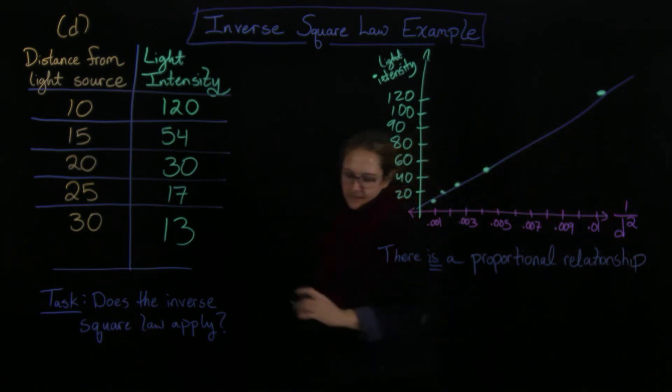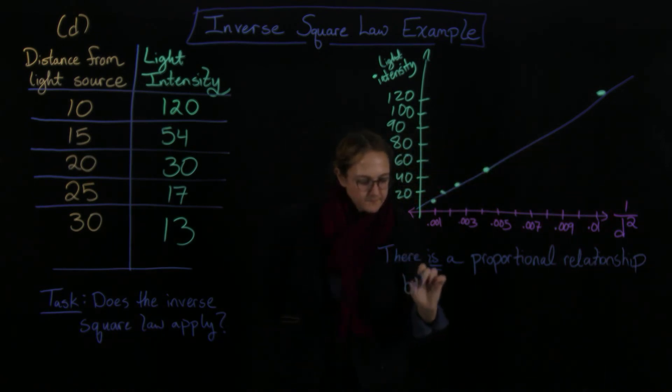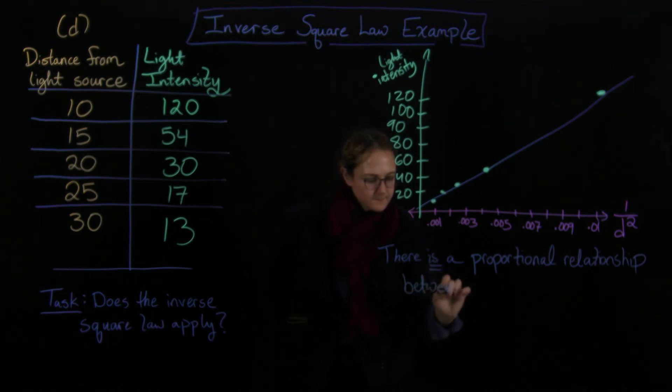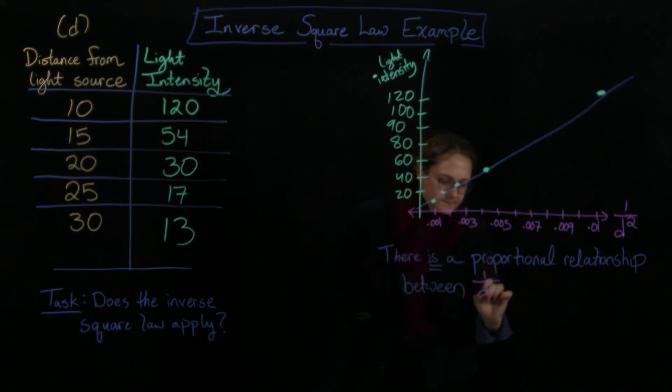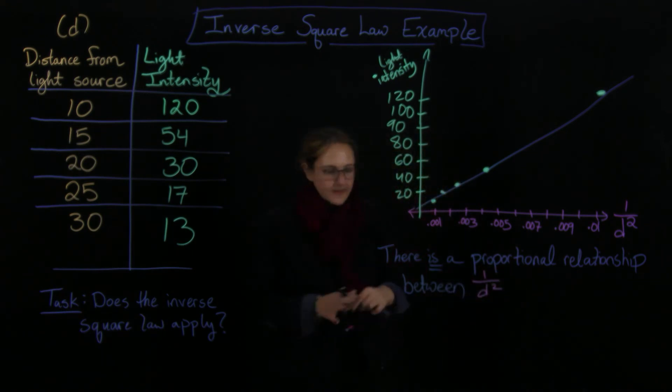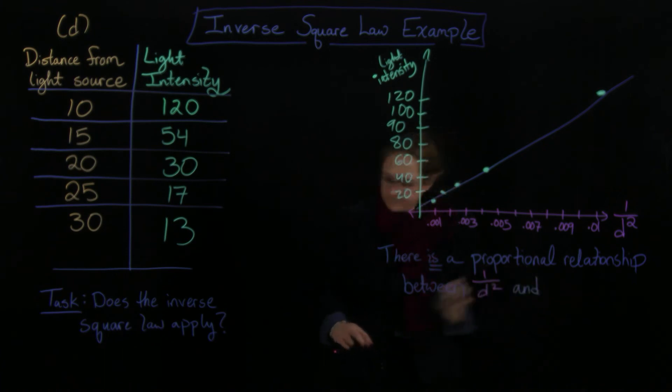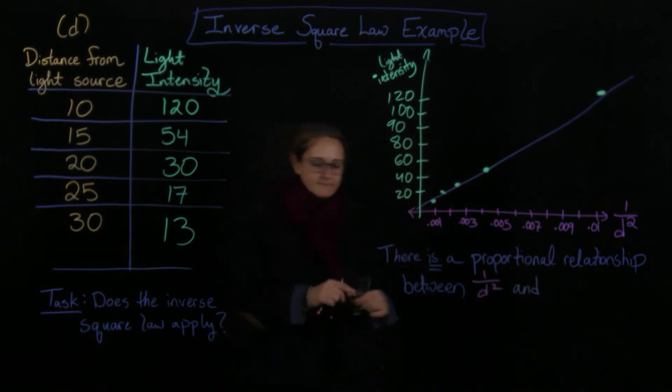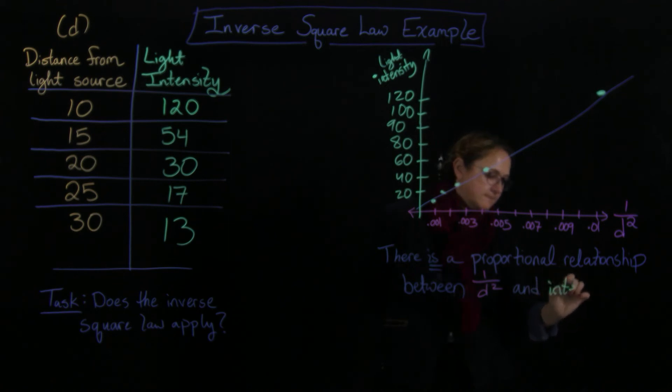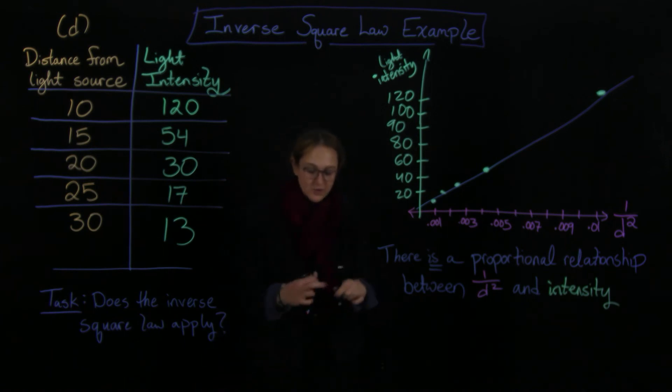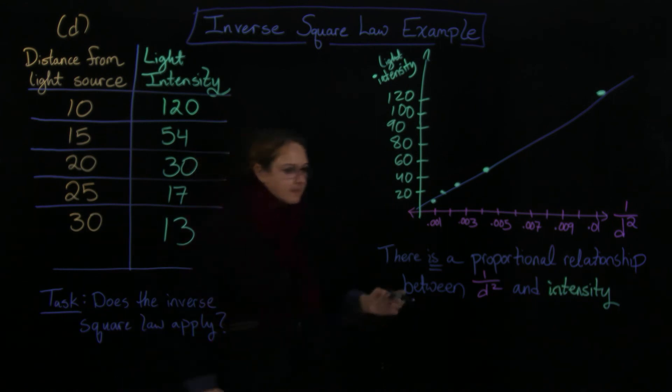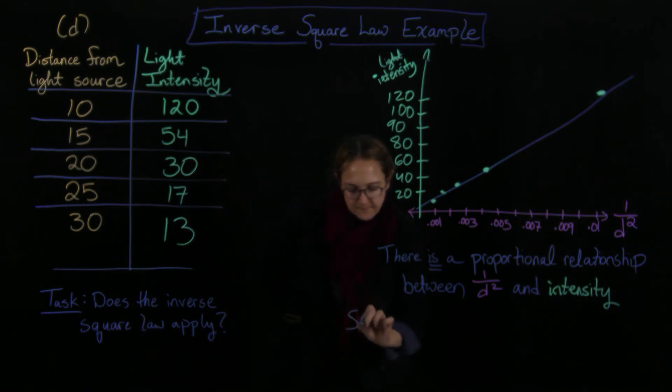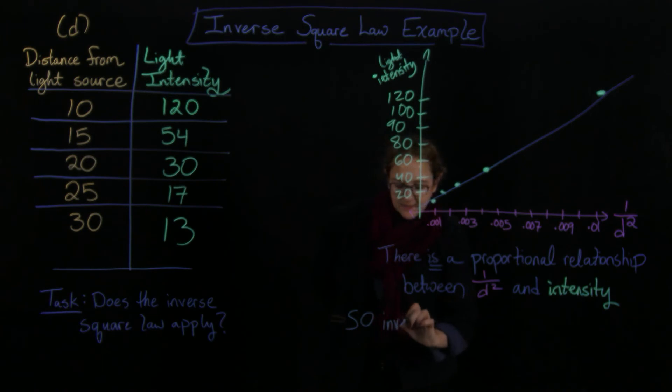So there is a proportional relationship between this one over d squared and the intensity. So the inverse square law is a good fit for the situation. The inverse square law is a good fit.